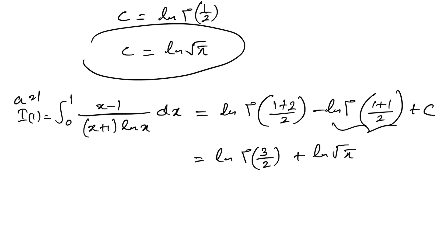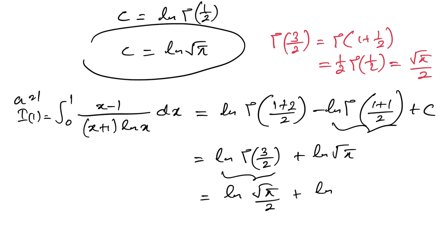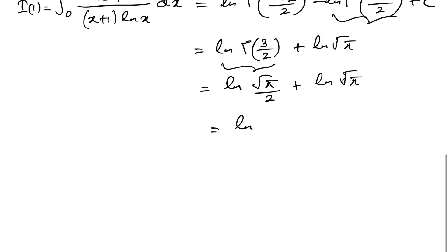We have natural log of gamma(3/2) plus natural log of square root of pi. Now gamma(3/2) equals gamma(1 + 1/2) equals (1/2) gamma(1/2) equals (1/2) times square root of pi, which is square root of pi over 2. Therefore I(1) equals natural log of (square root of pi over 2) plus natural log of square root of pi, which simplifies to natural log of (pi/2). This is the answer for this nice integral. Please subscribe if you enjoy this type of video, thank you for watching.